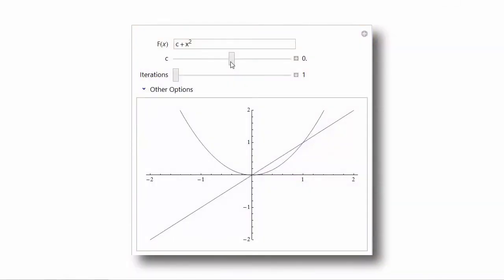So when c is less than a quarter, we have the two fixed points. As c increases towards a quarter, those two fixed points move towards each other. Here, this one's still attracting, this one's still repelling. And finally,